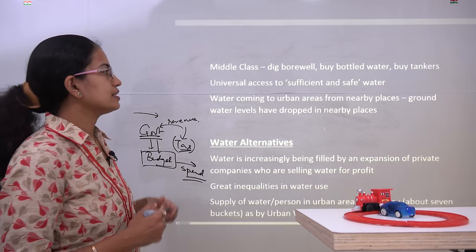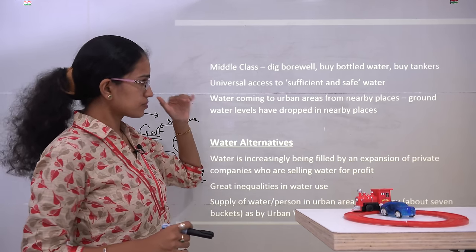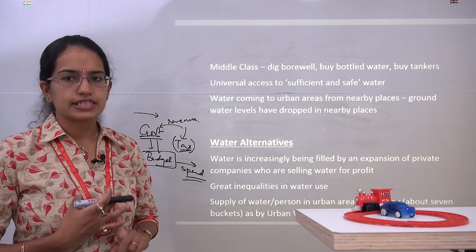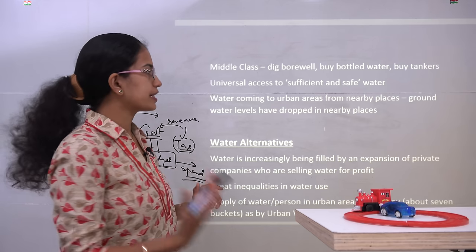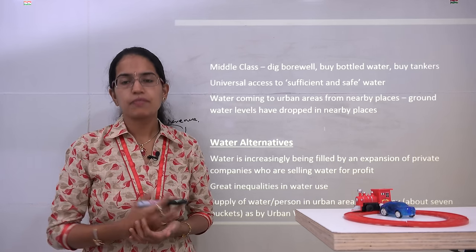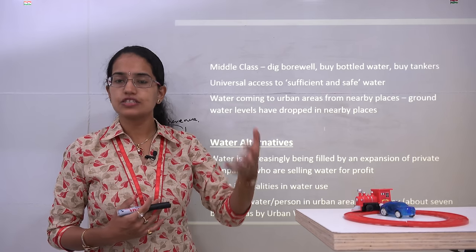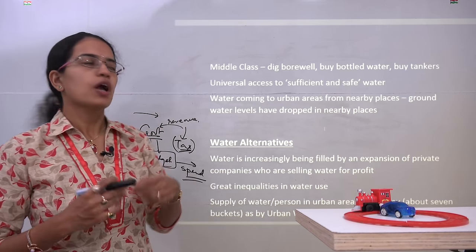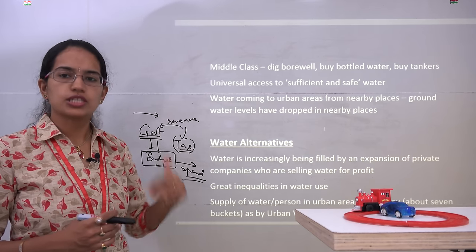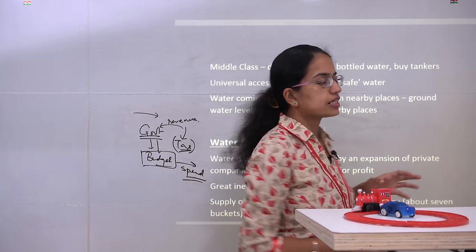Greater inequality creates greater distinction in society. Under the Sustainable Development Goals, one of the seventeen goals is clean water and sanitation, which we intend to achieve. The lower class is still struggling with public water supply. The middle class, however, can dig borewells, get water purifiers, or buy tankers and bottled water to get potable water. But the poor class still does not have any such option.